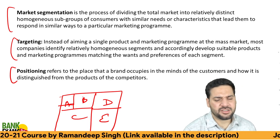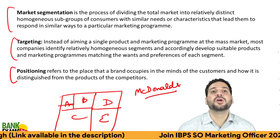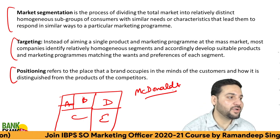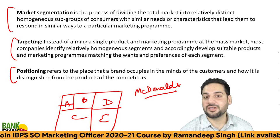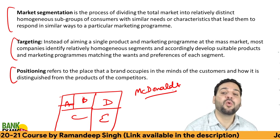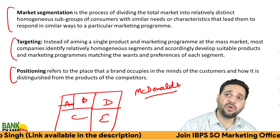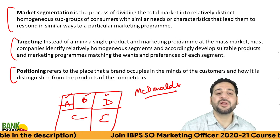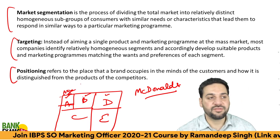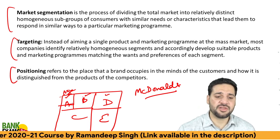There are many criteria for doing market segmentation — age, demography, culture, and multiple other factors. A very good example is McDonald's. In India, you get the Maharaja Mac instead of the Big Mac, because people in India are not going to eat beef. That is market segmentation — dividing the whole market into segments based on common characteristics.